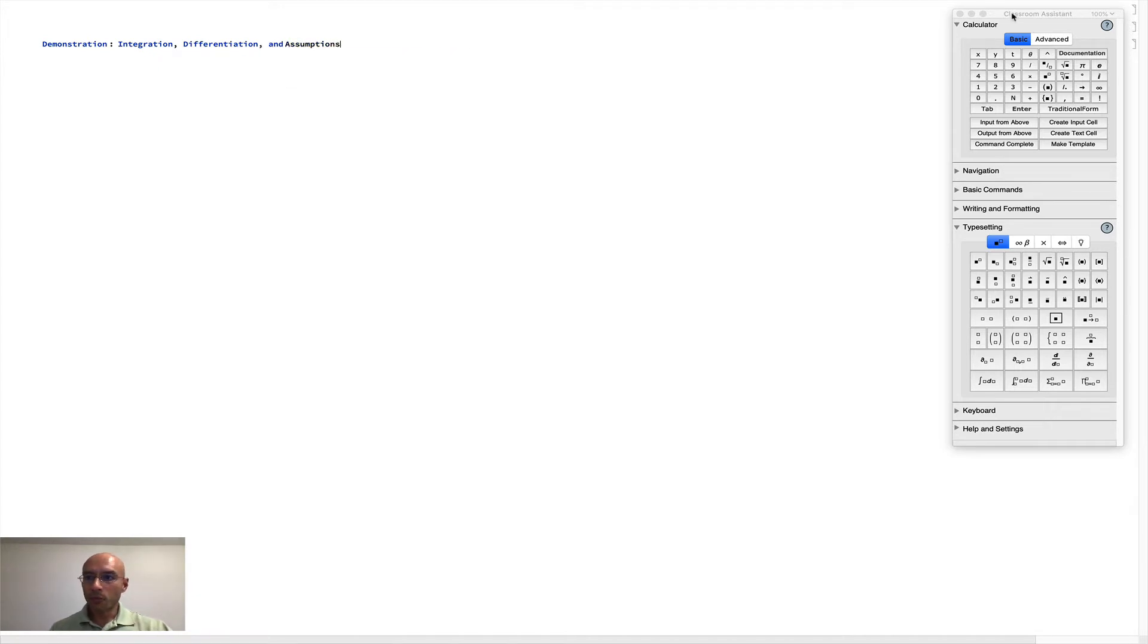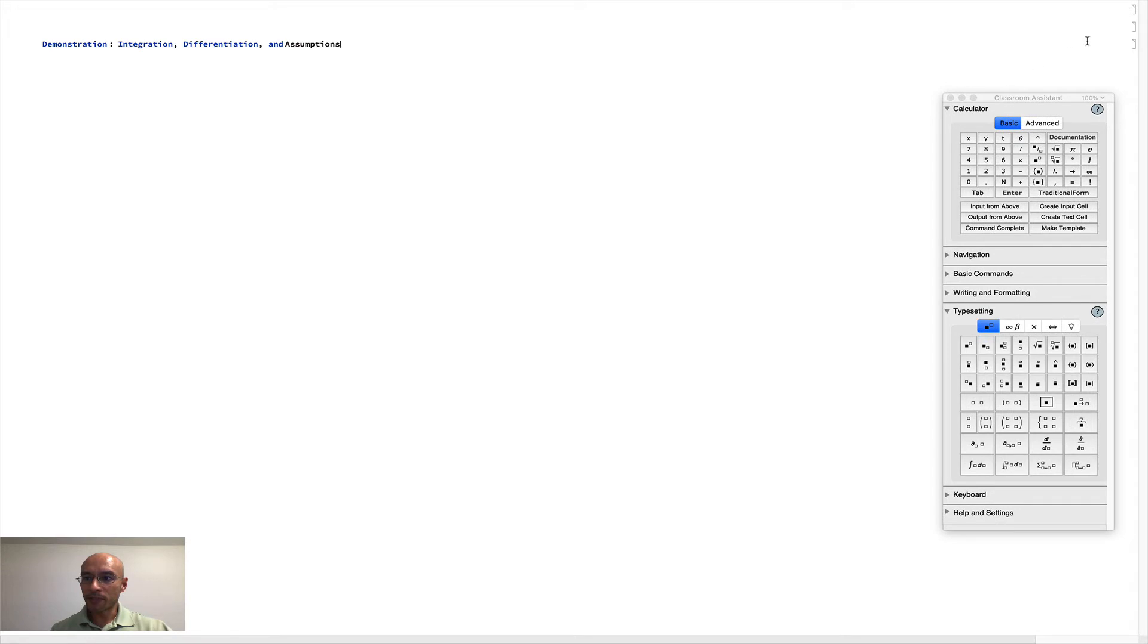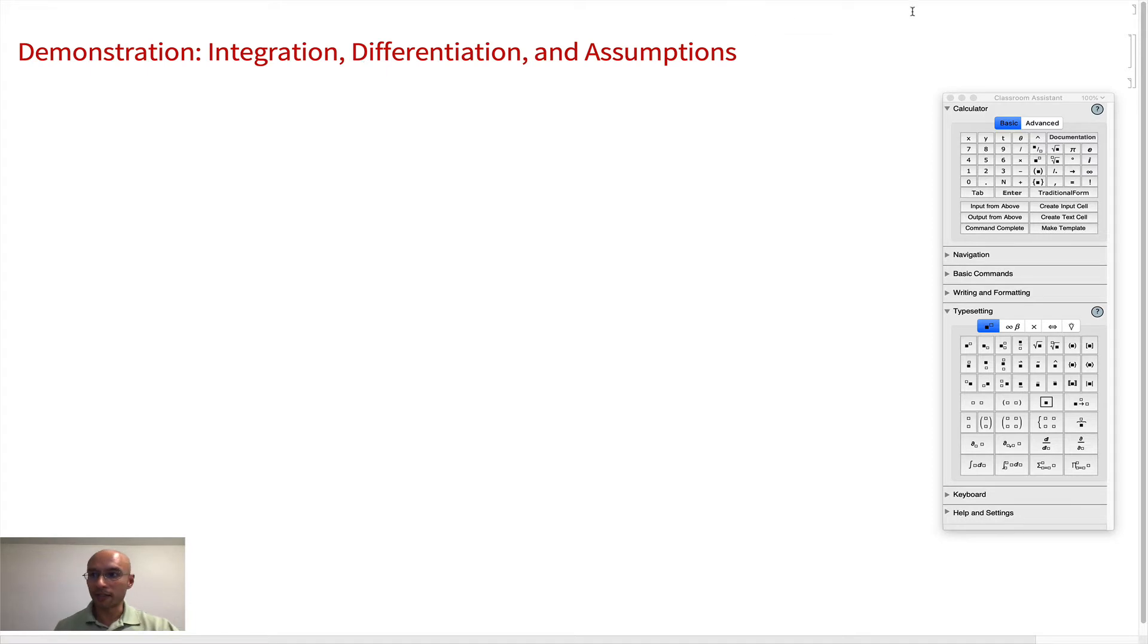One thing I'm going to do is I'm going to click on this cell and I'm going to make it a title cell. I'm going to come to the menu, title. That's not quite the cell I wanted to work in, so I'll paste it there.